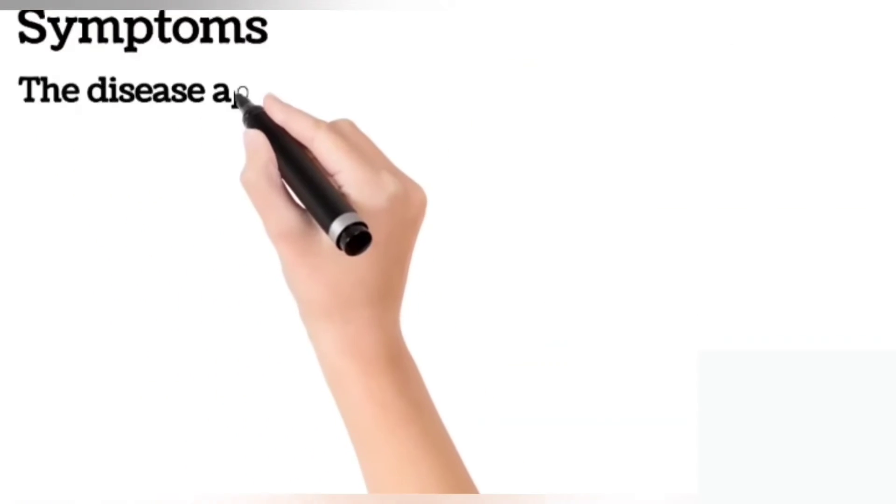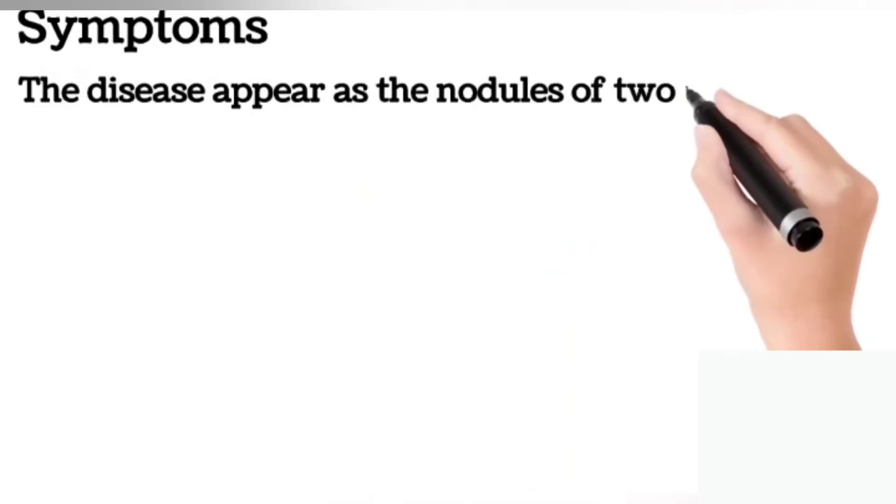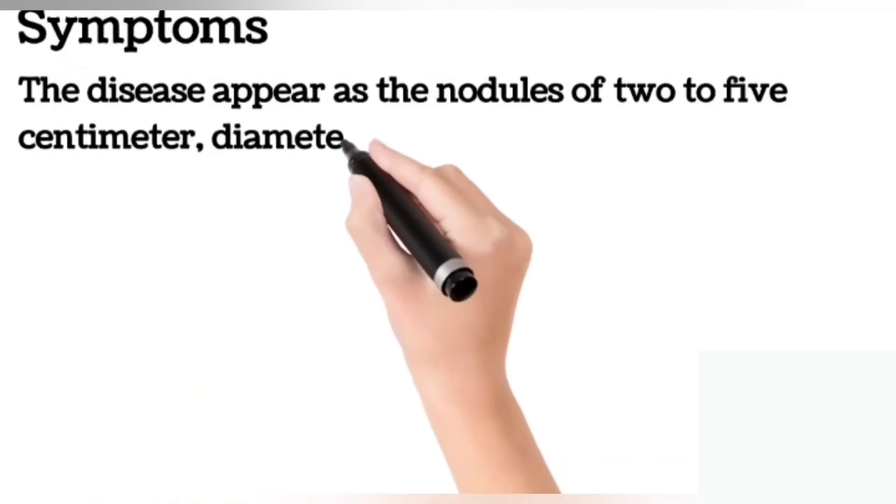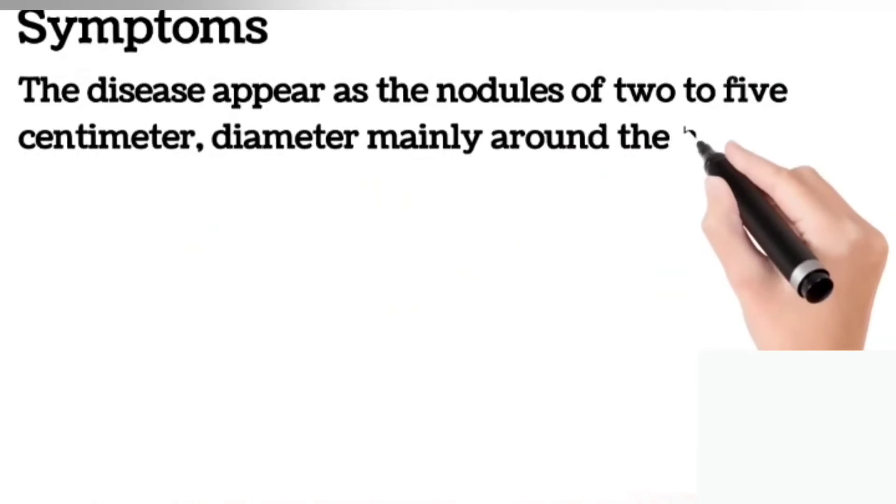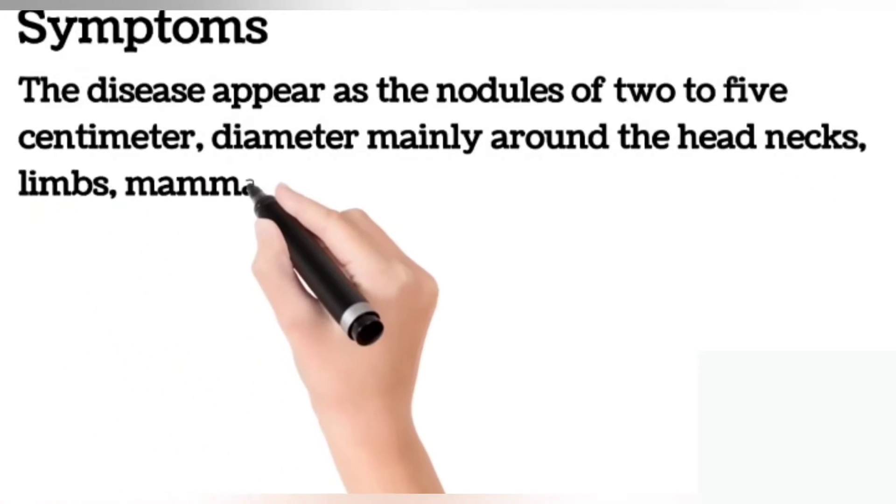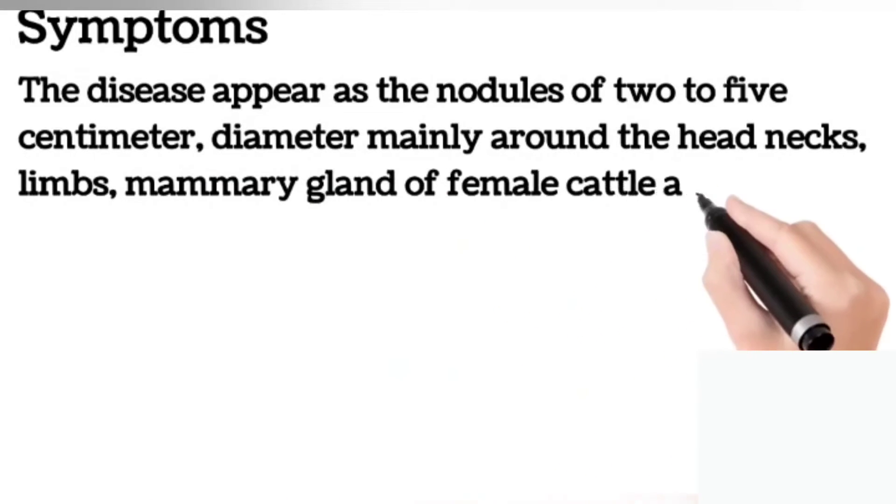Symptoms: Symptoms are some traits which are seen in an infected animal. The disease appears as nodules of 2 to 5 cm diameter mainly around the neck, head region, limbs, mammary glands of female cattle, and genitals.